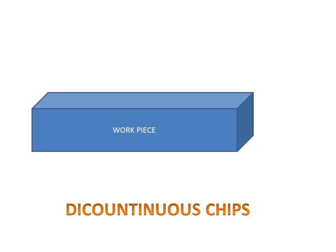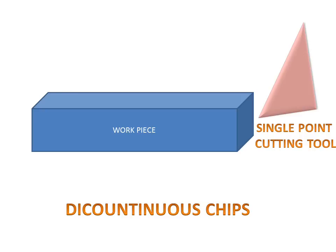We have a workpiece and a single point cutting tool. This single point cutting tool will travel on the workpiece and remove the material. Discontinuous chips are formed for brittle material if we use a single point cutting tool on a brittle workpiece.